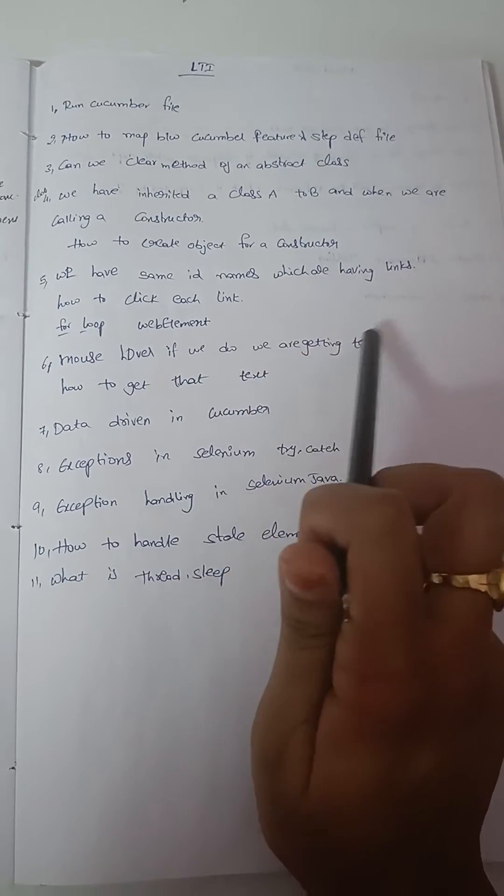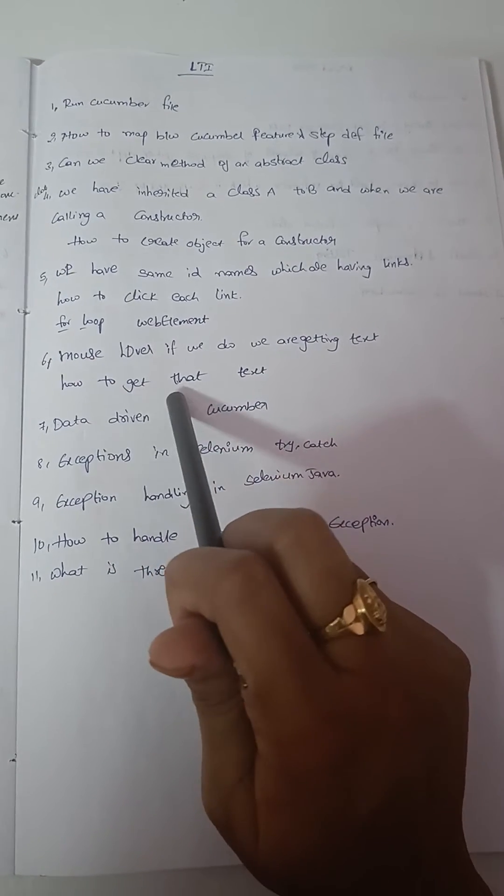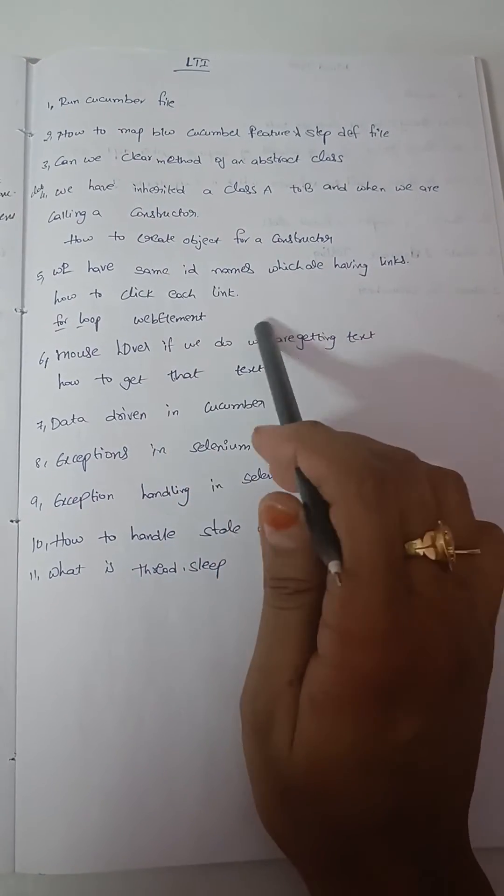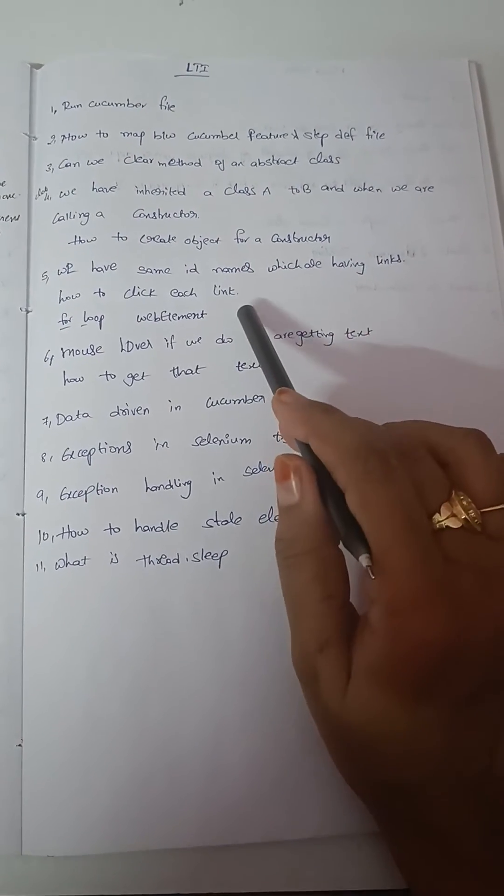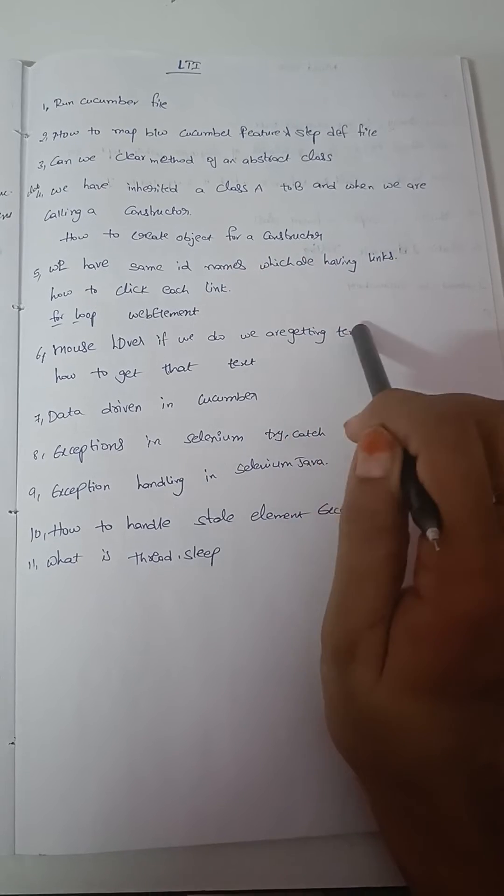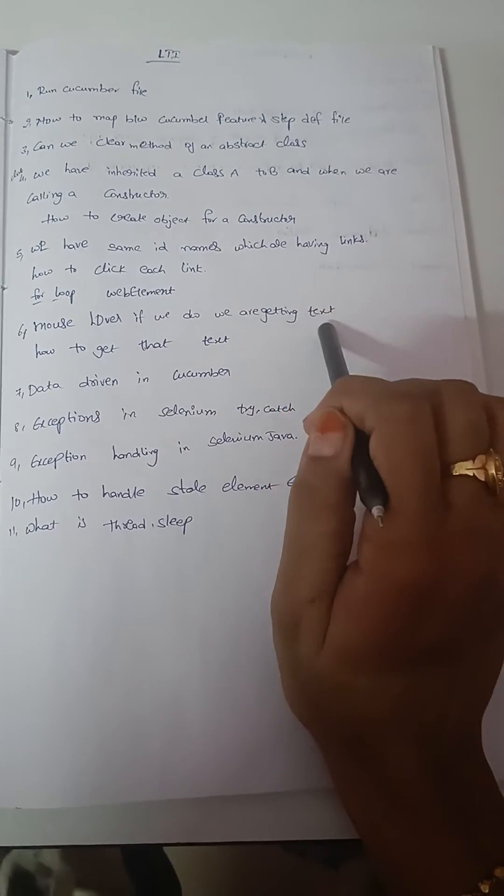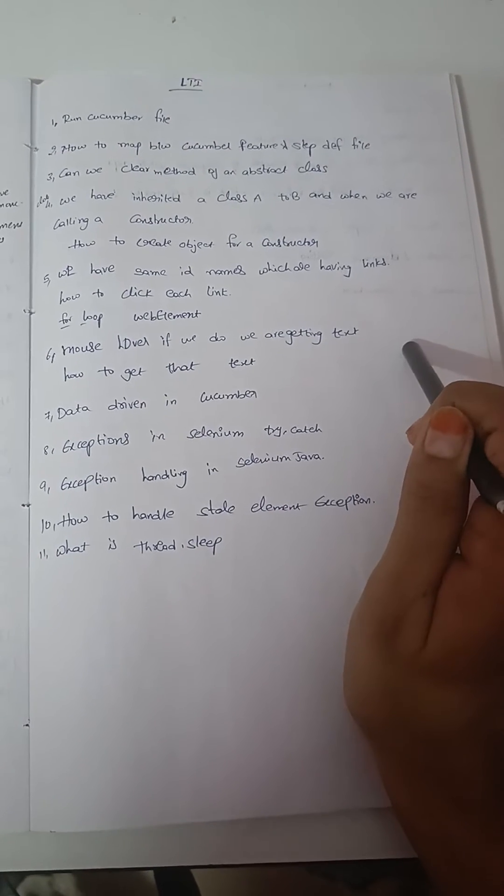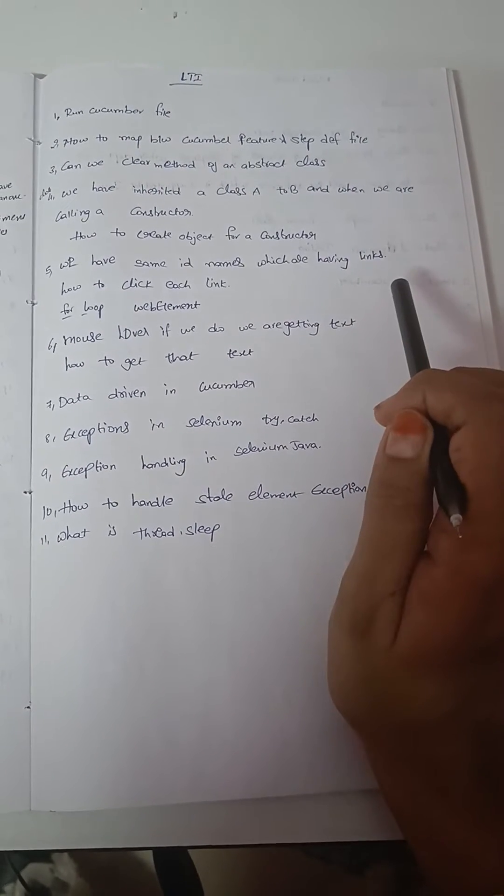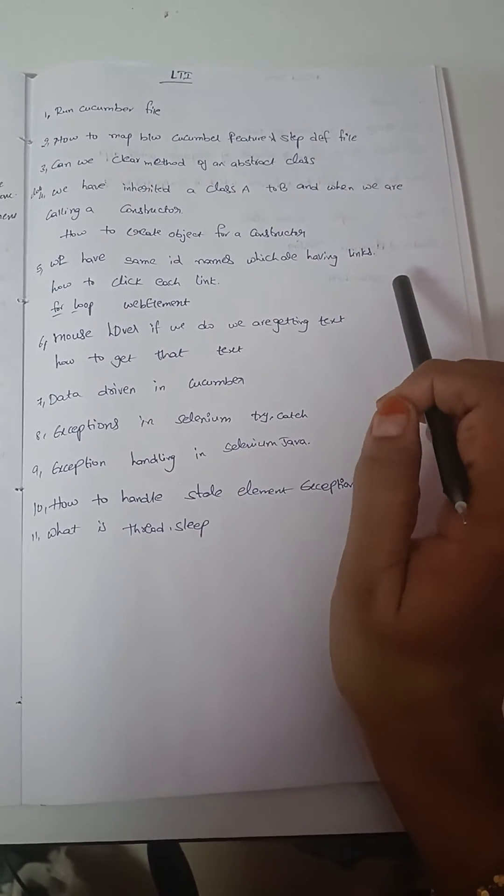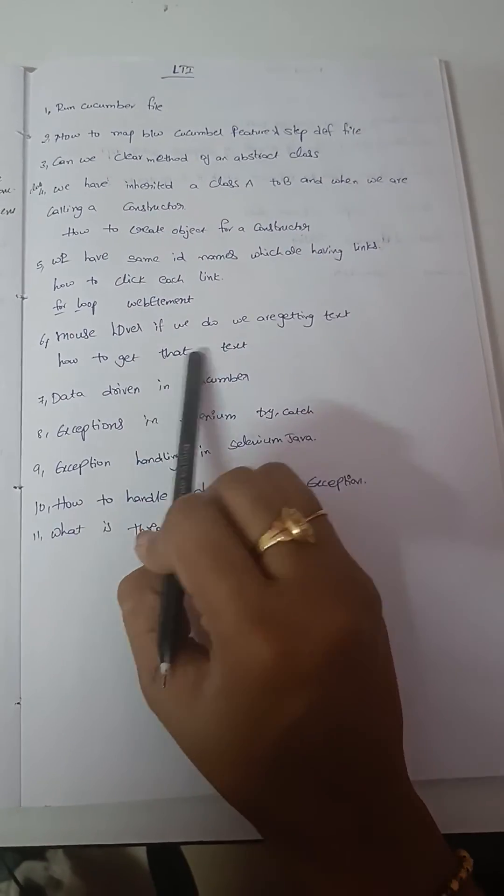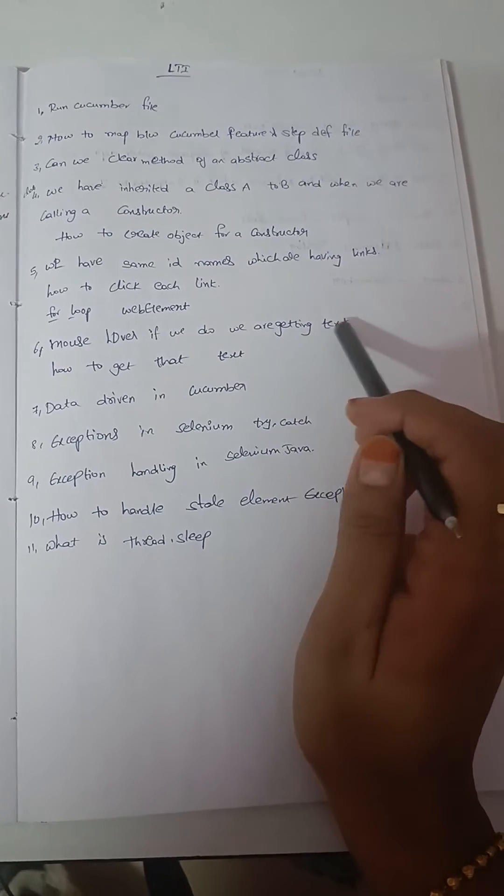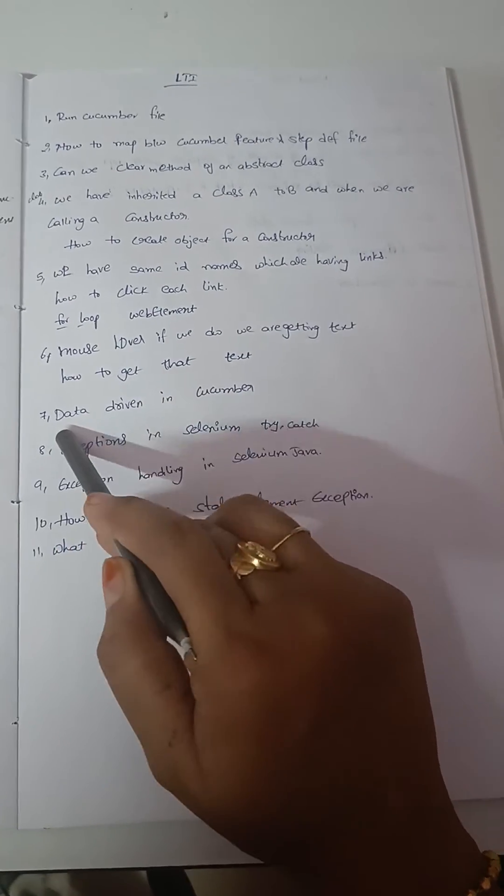If we do mouse hover, we are getting a text - how to get that text? The scenario is like this: there is a field, and whenever we take the mouse over the text field, there is a text that will be visible. So how to get that visible text? We have to write a Selenium with JavaScript script for that particular scenario.